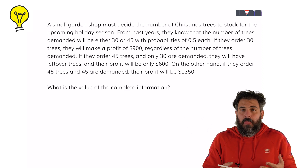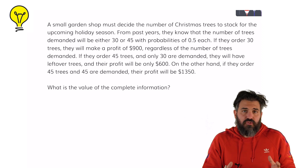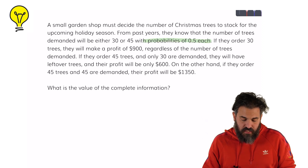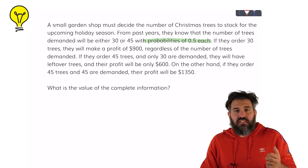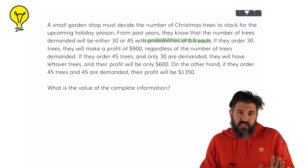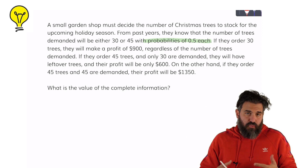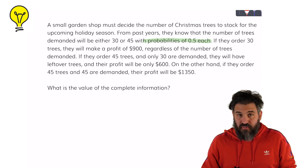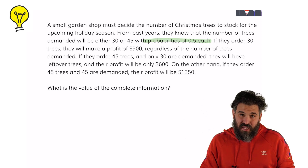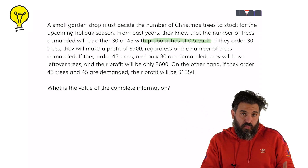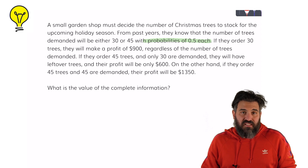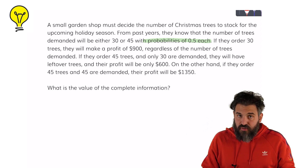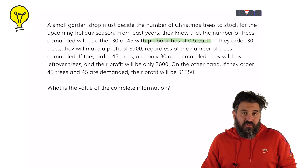We don't know how many trees we're going to sell. Those are the two possibilities: 30 or 45, each one has an equal probability of 50%. If we order only 30 trees then we're going to make a $900 profit regardless of how much demand there is. But if we order 45 and only 30 trees are demanded then we're going to end up losing a bit of money on waste and the profit would only be $600. If we order 45 trees and 45 trees are demanded, best case scenario, our profit would be $1,350.